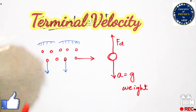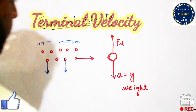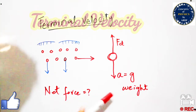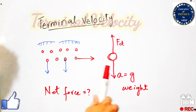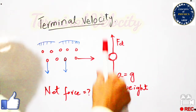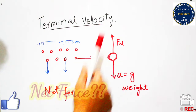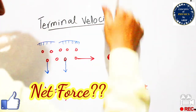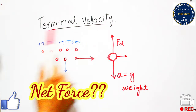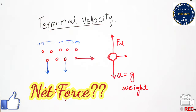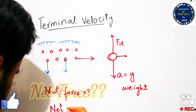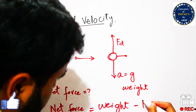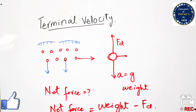We will consider that this particle is suspended in the air. We need to calculate the net force. Net force will be the difference between weight, acting in the downward direction, and drag force, acting in the upward direction. These two forces are in opposite directions. So the difference between weight and drag force gives the net force. The formula is: net force = weight minus drag force (Fd).